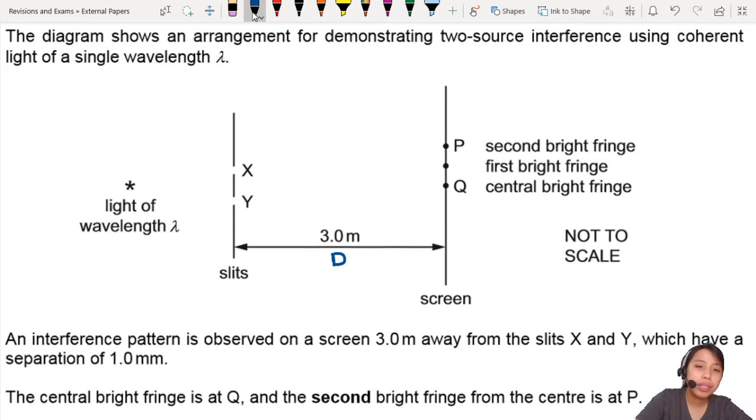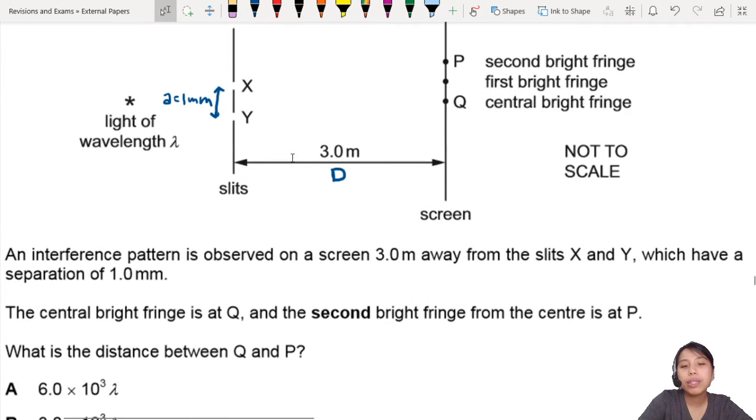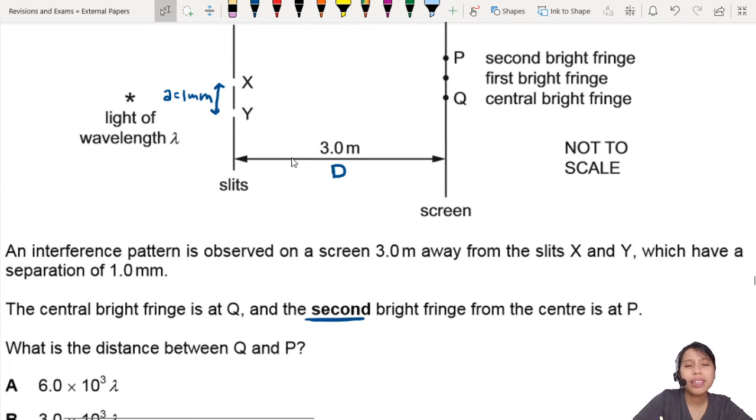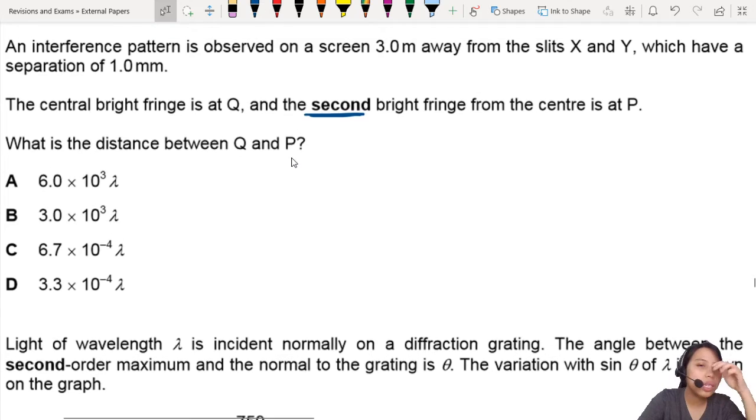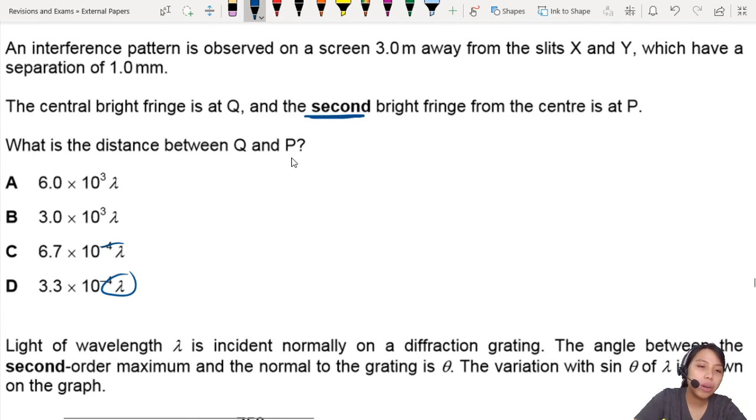The slits have a separation of one millimeter, so that is this thing here we call a, which is 1mm. The central bright fringe and the second bright fringe from center is at P—they bolded the word second, I wonder why. What is the distance between Q and P in terms of lambda? You can see all this lambda here.